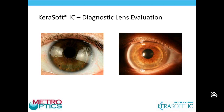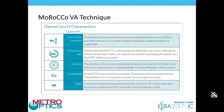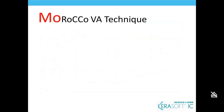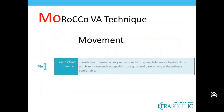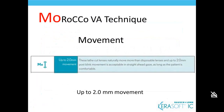The MOROCCO VA acronym stands for Movement, Rotation, Centration, Comfort, and Visual Acuity. All of these taken together create the dynamic assessment. For Movement, ideal movement is between 1 to 2 millimeters, assessed in straight-ahead gaze as well as up gaze. This is considerably more movement than we're used to seeing with standard soft toric lenses, but this is considered ideal for the Kerasoft IC lens.